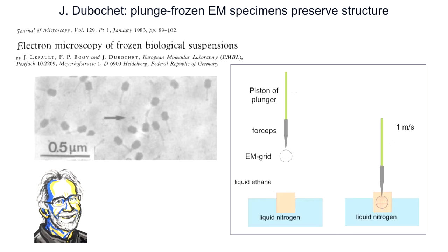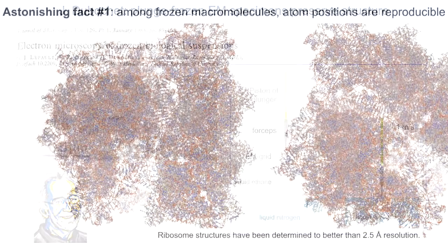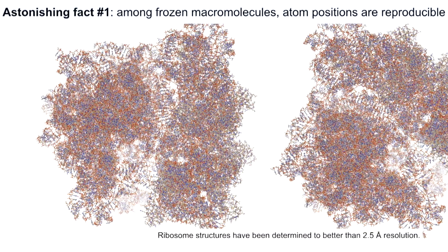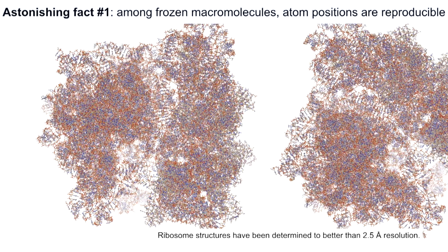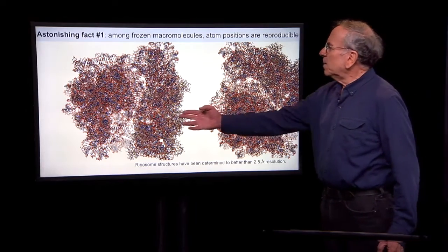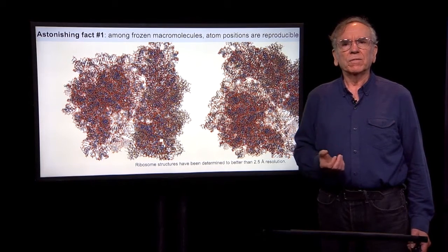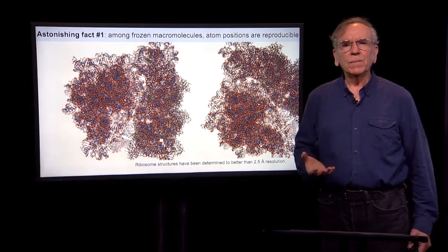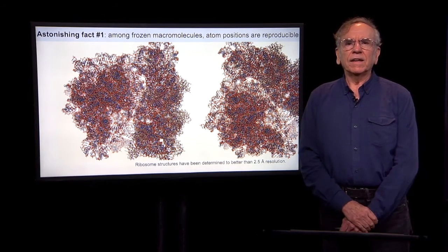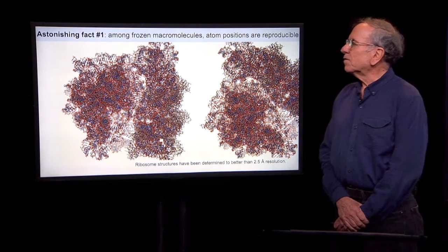The astonishing phenomenon in these frozen specimens is that a large macromolecule — for example, something the size of a ribosome — has, from one copy to another, the positions of individual atoms consistent within something on the order of one angstrom. That means we can obtain information from multiple copies of our macromolecule and average that information together to extract three-dimensional structure. It is the reproducibility of atom positions that fundamentally allows us to gather information from multiple particles.